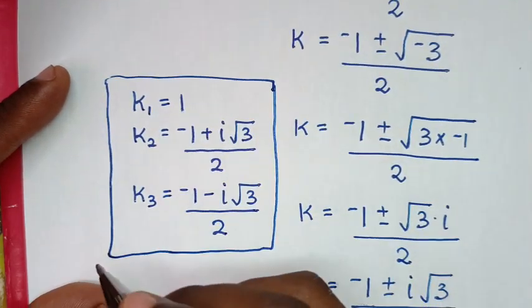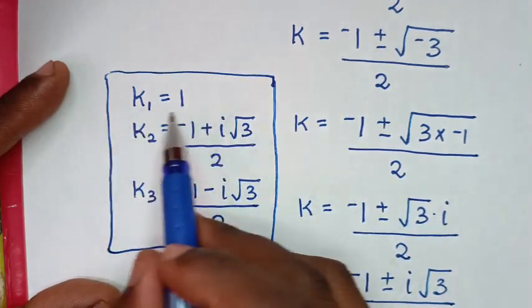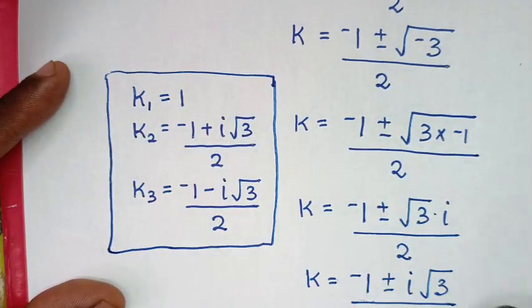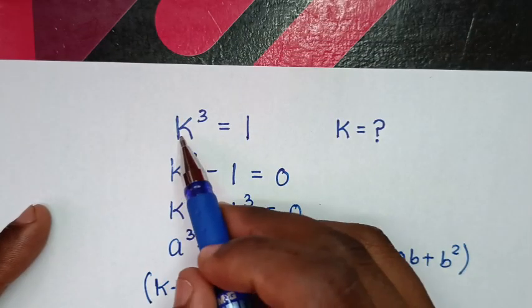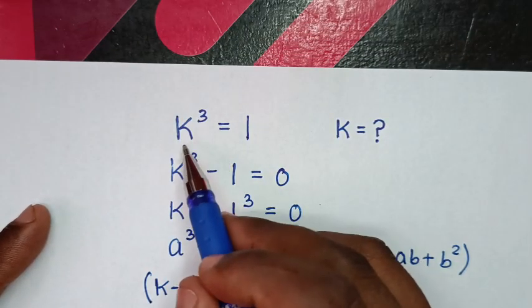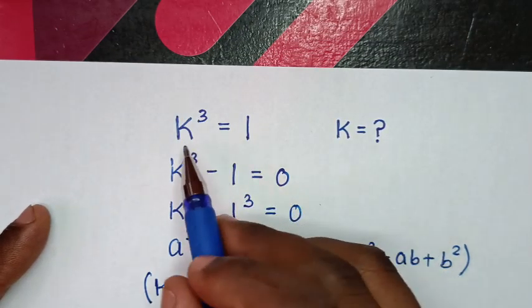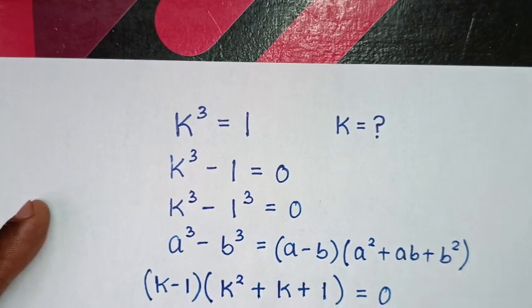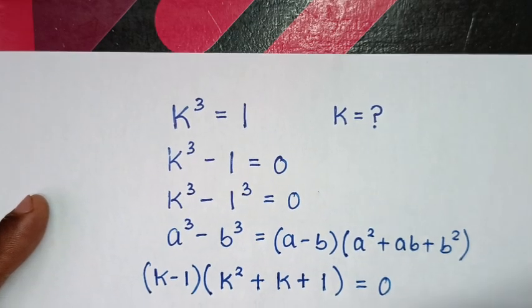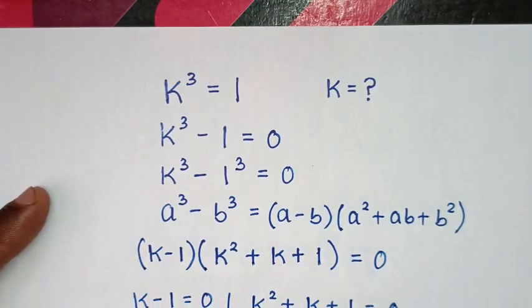Now let's check for the real solution of k is equal to 1. To check for k equal to 1, it will be 1 power 3, which is still 1, so 1 is equal to 1. The left side and right side are equal for the real solution. Also, for the complex solutions, it is correct.